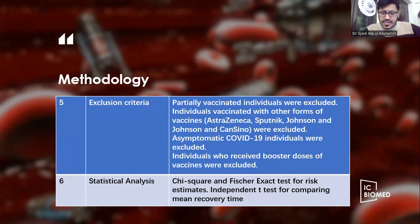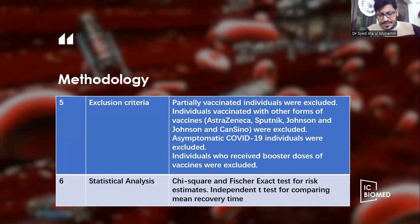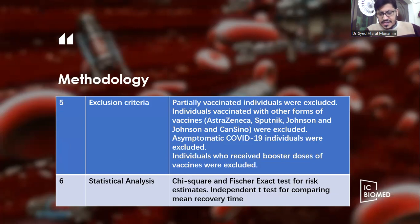Partially vaccinated individuals and those vaccinated with other forms of vaccines such as AstraZeneca, Sputnik, and Johnson & Johnson were excluded. Asymptomatic COVID-19 individuals and those who had received booster doses were also excluded. We applied the chi-square test and Fisher's exact test to find the odds ratio, and an independent t-test was used to compare mean recovery time between inactivated and mRNA vaccinated individuals.